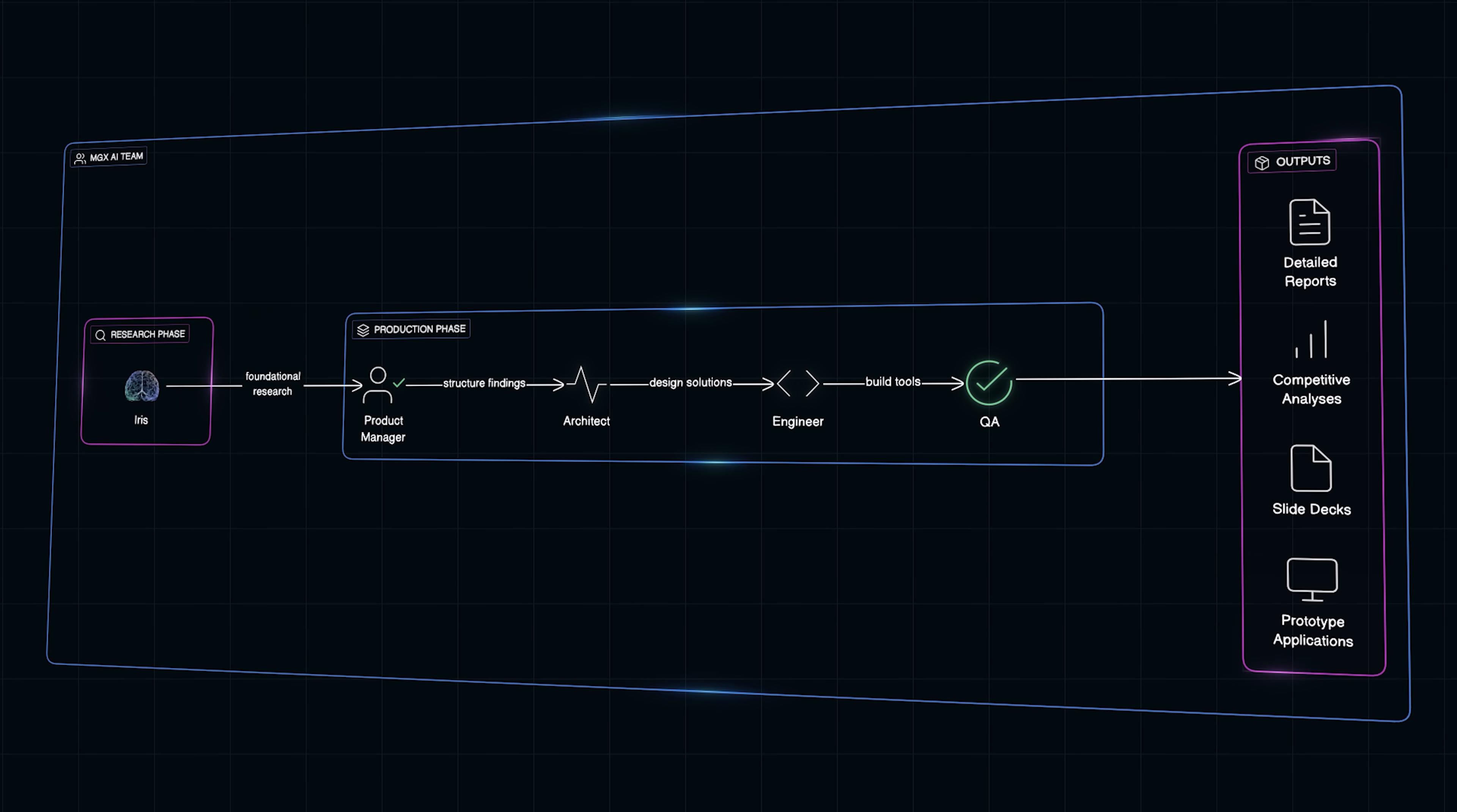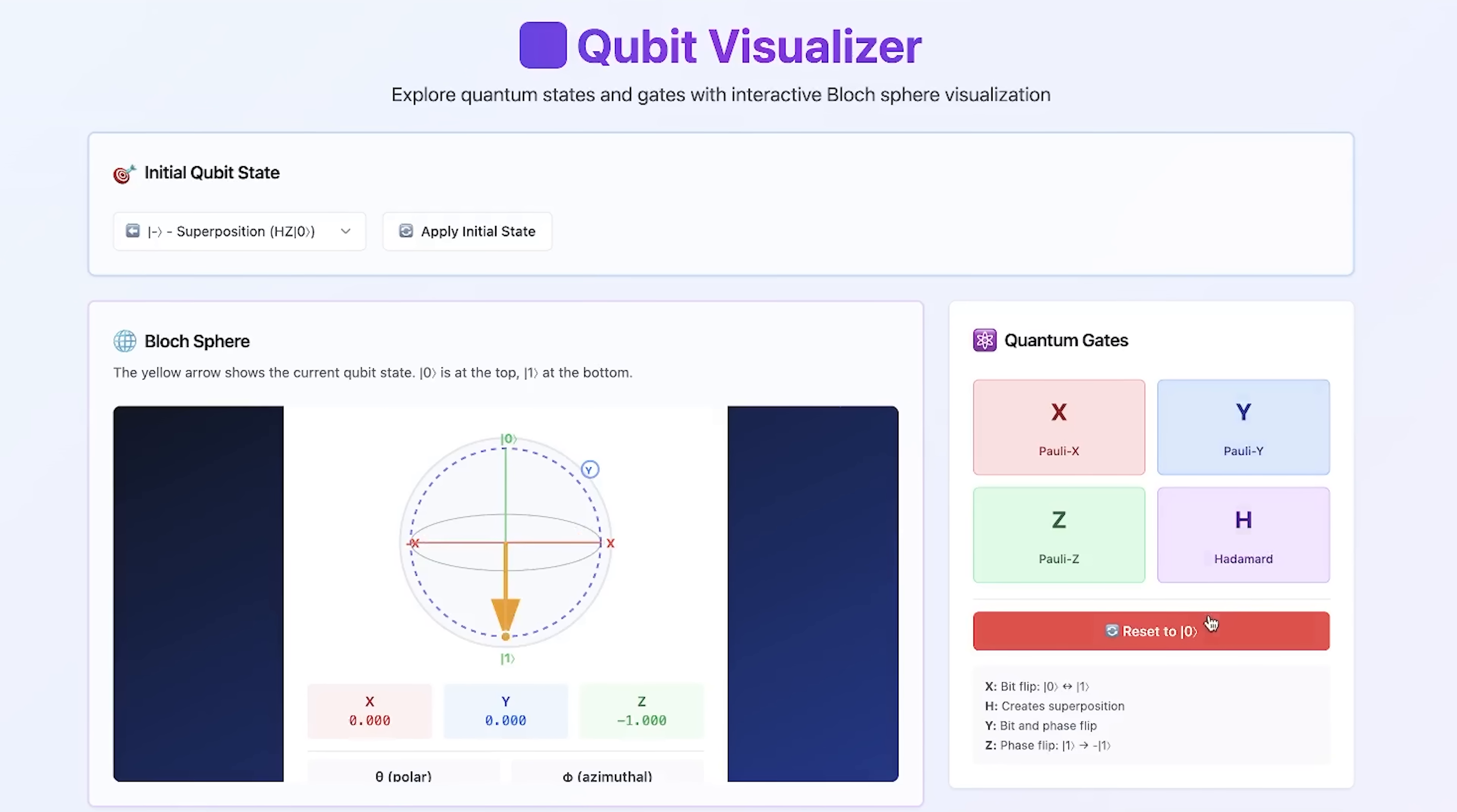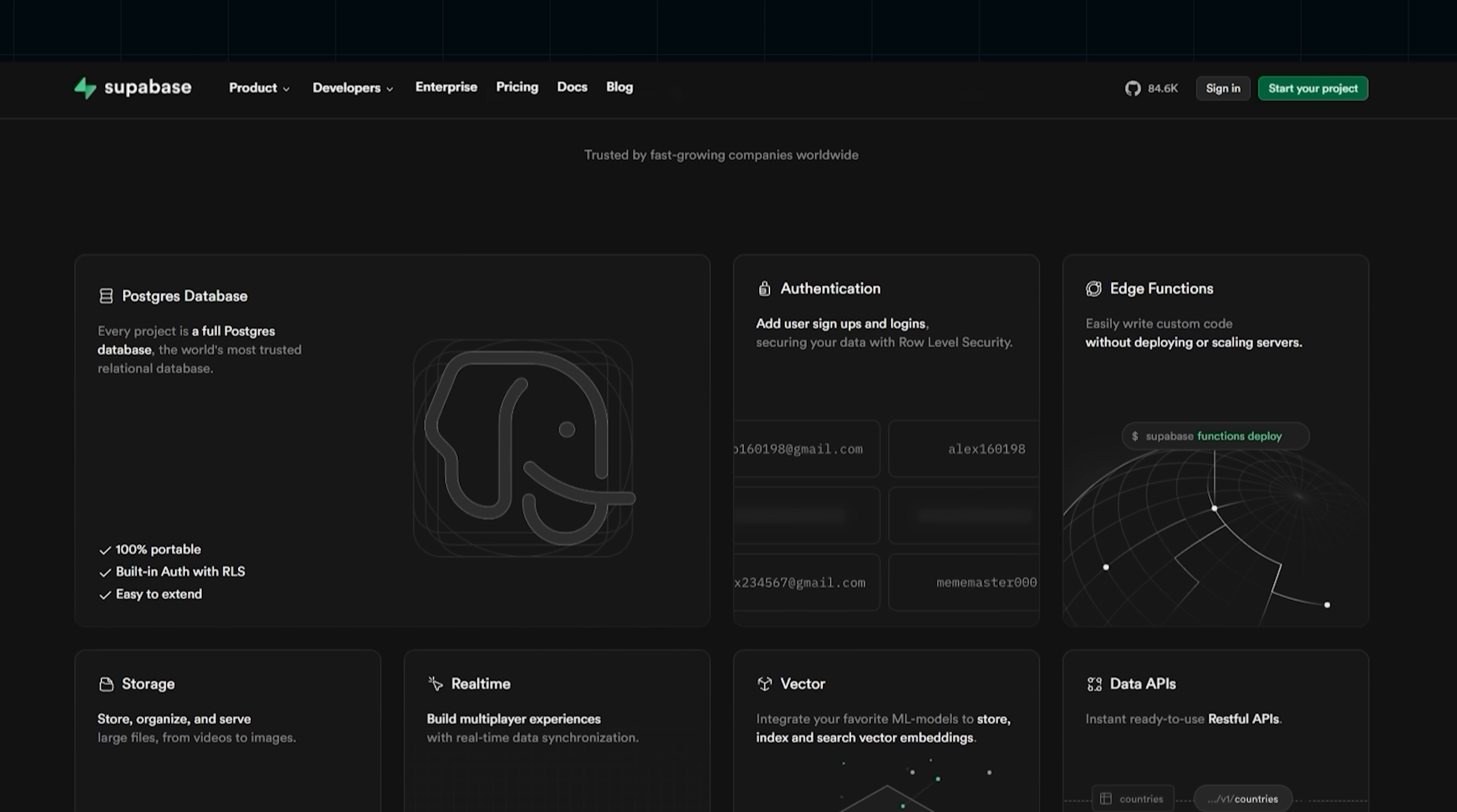For example, I asked MGX to compare classical and quantum cryptography. IRIS quickly produced a research foundation with diagrams, timelines and references. From there, other agents transformed that research into a presentation and could even build a qubit visualizer app to demonstrate quantum principles interactively. This is far beyond simple summarization. I asked it to build a simple qubit visualizer and it implemented this app for me in minutes. This app lets you pick a qubit starting state, apply gates like X or Hadamard and instantly see the probability of measuring 0 or 1. It even plots a little arrow on the Bloch sphere we just talked about. Now MGX uses Supabase as its backend and there's a lot to learn from how these systems operate behind the scenes and stay resilient at scale.